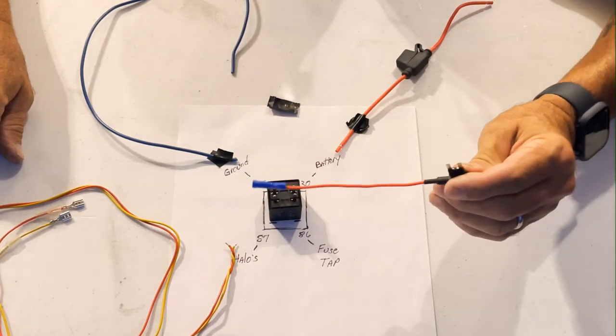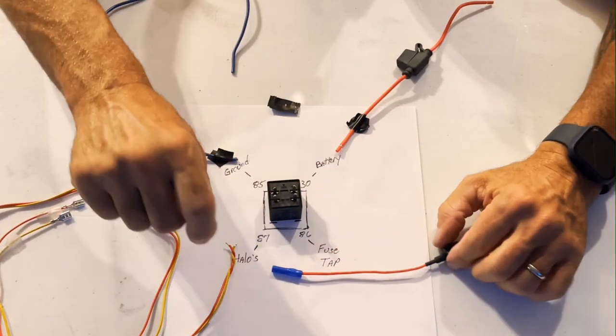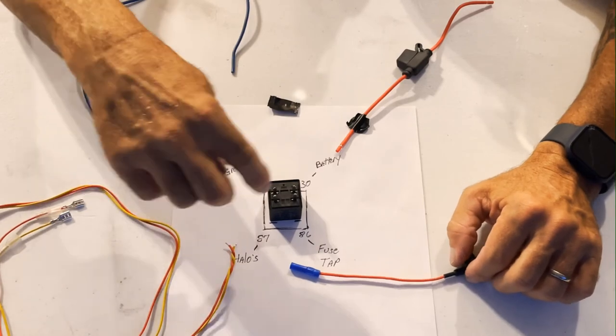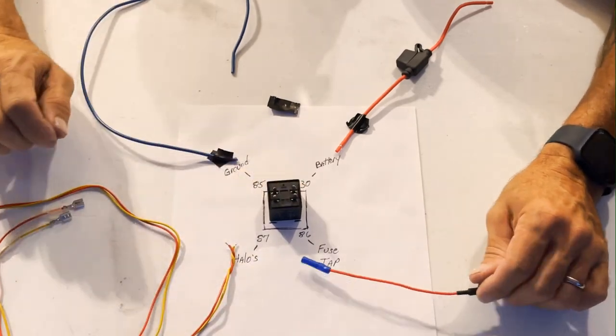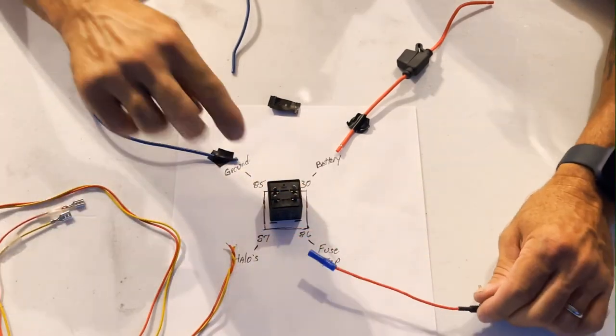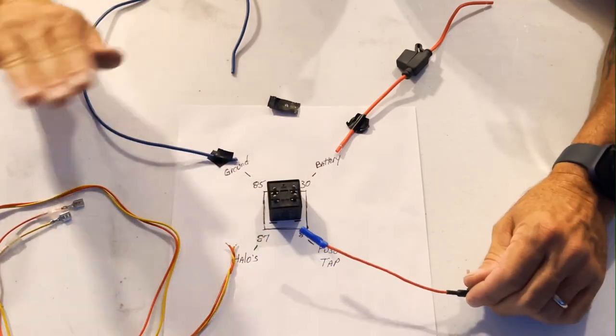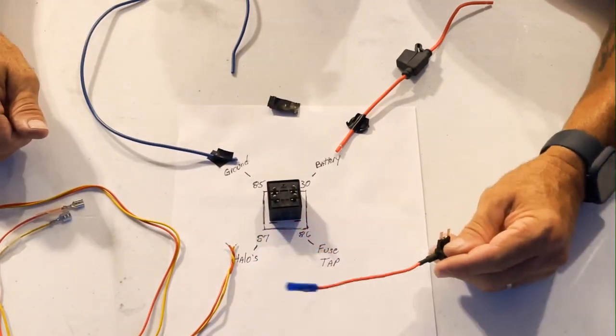Find it, and then go ahead and you can run a toggle switch and a toggle switch would then go to pin 86. So this to a toggle switch to 86, and then that removes any draw off of whatever you're tapping into.